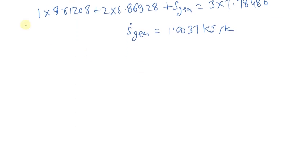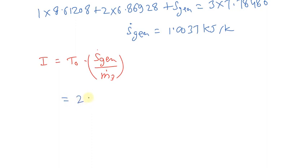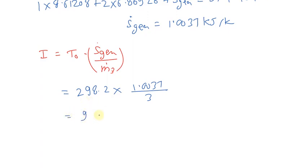Now let's apply the formula to calculate irreversibility per kg: I = T0 × S-dot-generation / M3-dot. Substituting all values: T0 = 298.2 K, so I = 298.2 × 1.0037 / 3. Finally, we get irreversibility equals 99.76 kJ per kg. This is the final answer for this problem.